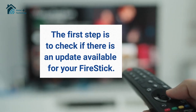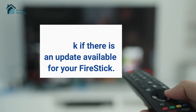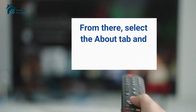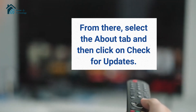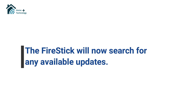The first step is to check if there is an update available for your Fire Stick. To do this, go to the Settings menu and navigate to the System section. From there, select the About tab and then click on Check for Updates. The Fire Stick will now search for any available updates.